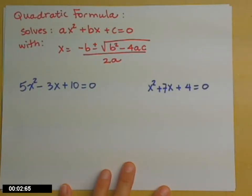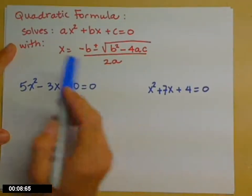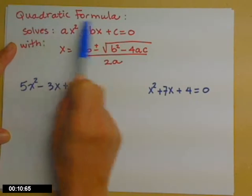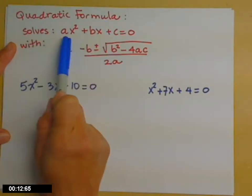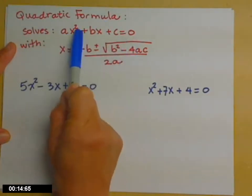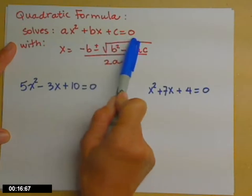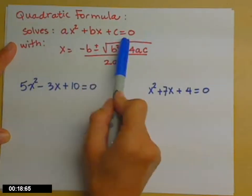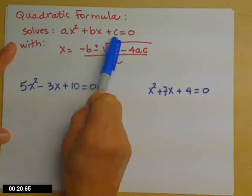So here are two more examples of how we solve quadratic equations using the quadratic formula. Just to remind yourselves, the quadratic formula solves a quadratic equation ax squared plus bx plus c equals 0. You need to get it in this form first so that we can read off a, b, and c.